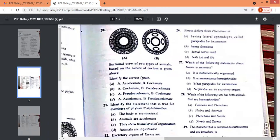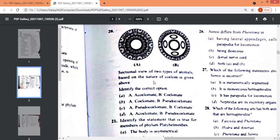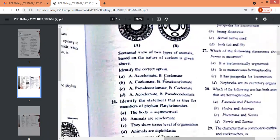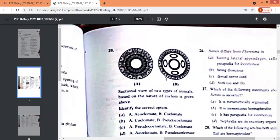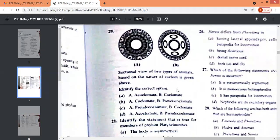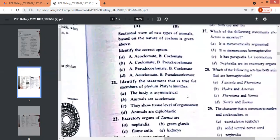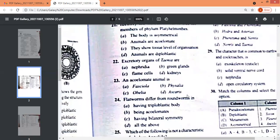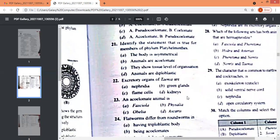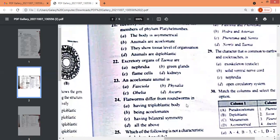And then we come to this twentieth question. So now I hope it's clearer. So this is twentieth question, the diagram, and then the sectional view of two types of animals. So now, let's see, twenty-first, twenty-second, and twenty-third question.